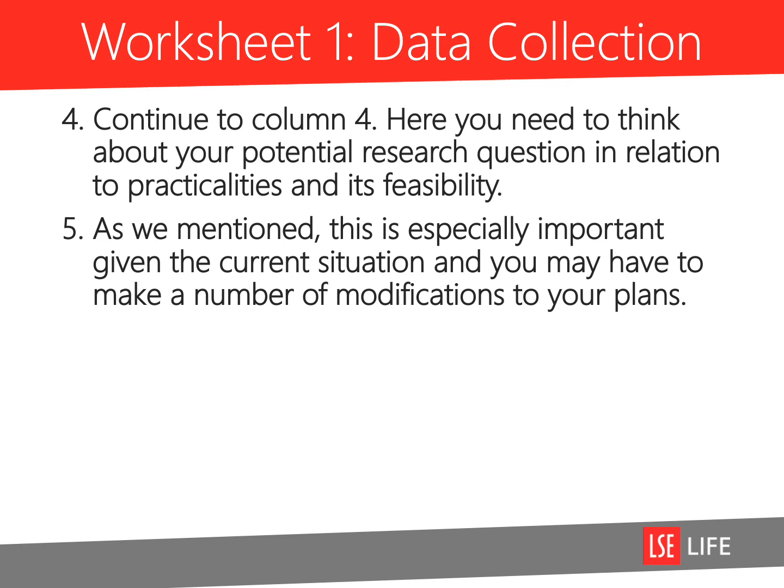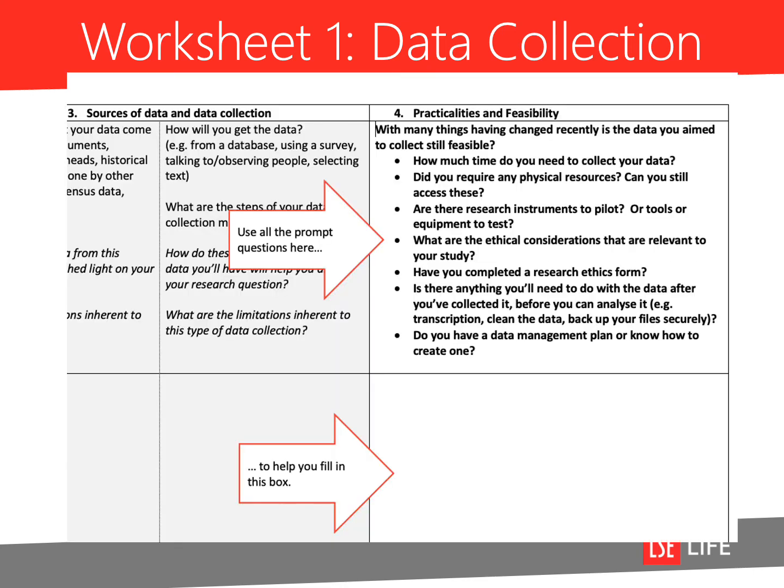Continue to column four. Here you need to think about your potential research question in relation to practicalities and its feasibility. As we mentioned, this is especially important given the current situation and you may have to make a number of modifications to your plans. Pause the screencast now and use all the prompt questions in the two columns to help you fill in the boxes below. Again, don't worry if you don't have an answer to all of these questions, but do try to think clearly about the changes and modifications to your data collection aims you may potentially need to put in place during the current lockdown.